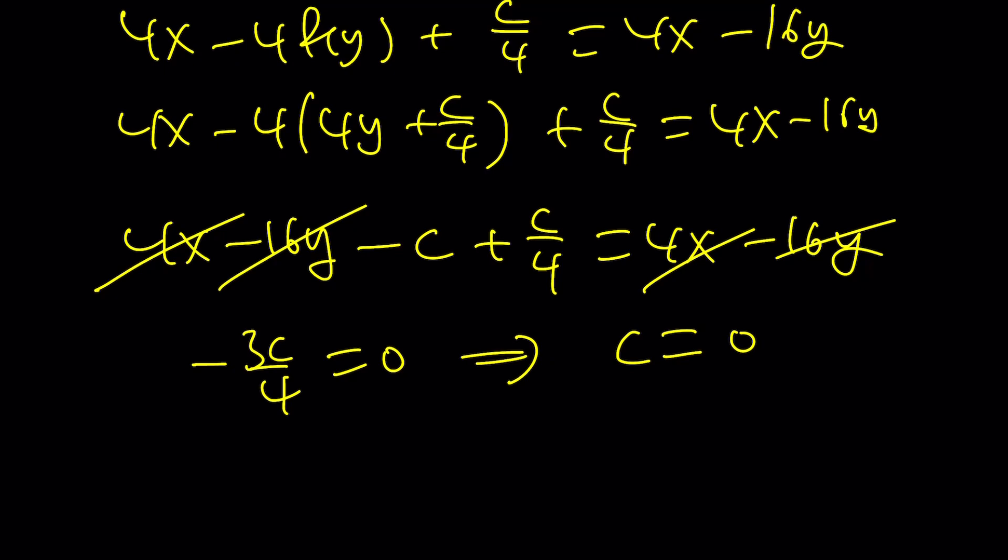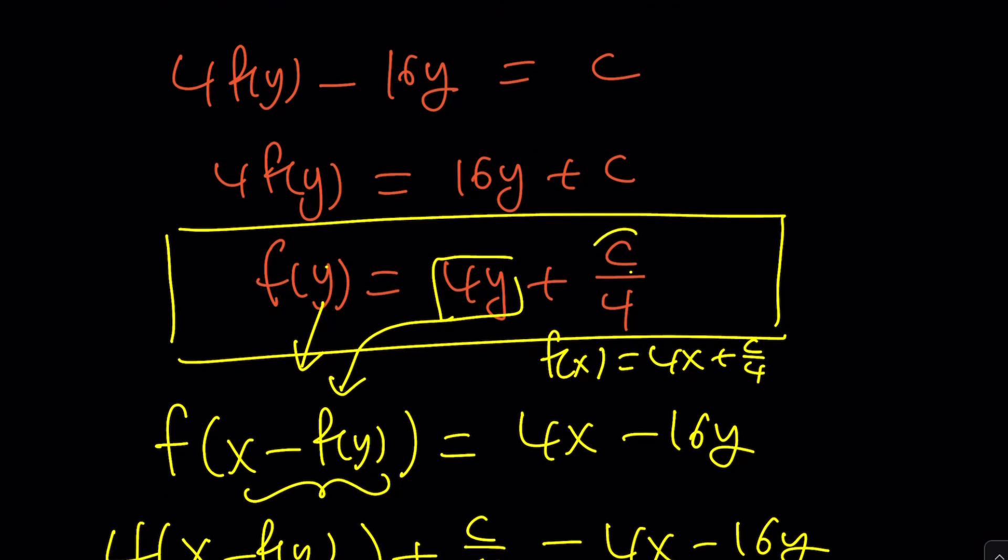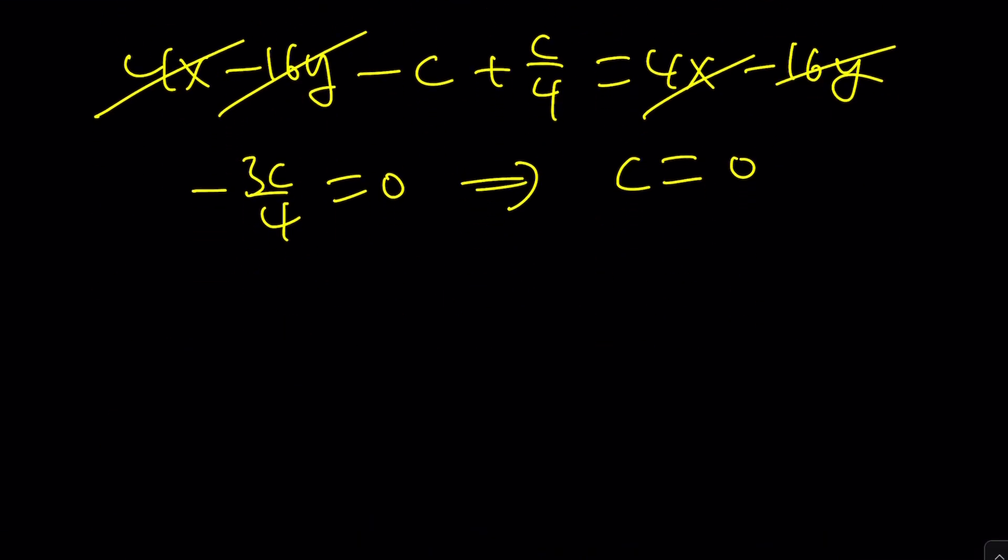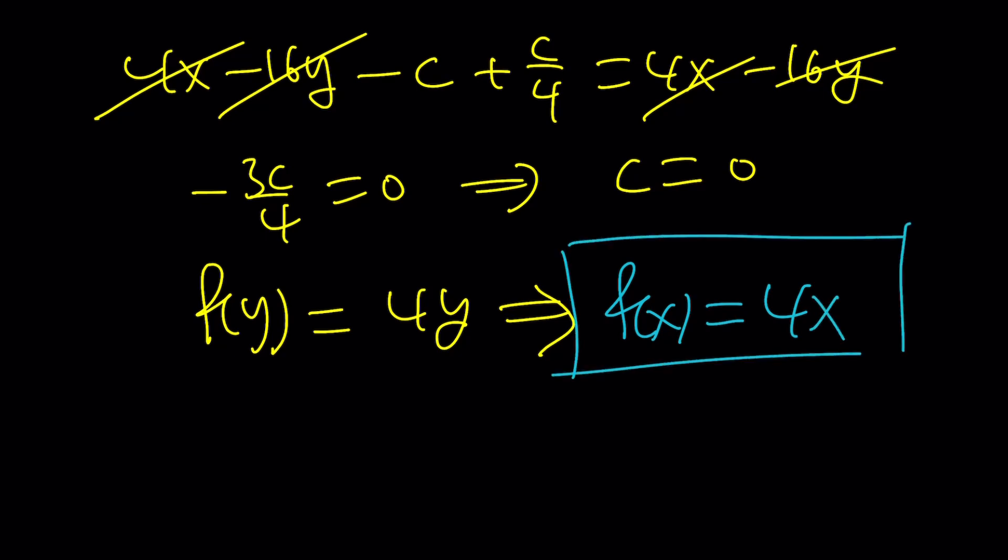So, that means f(0) = 0. And, now, I can go back and replace c with 0. And, that's going to give me f(y) = 4y. And, of course, just like before, this implies that f(x) = 4x. So, that's our function in terms of x. Make sense? Good, good.